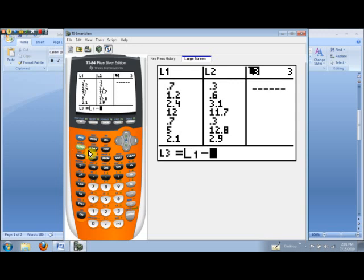And then notice when we do that, we get the differences of the ordered pairs. In other words, 0.7 minus 0.3 is 0.4, 1.2 minus 0.6 is 0.6, and so on. Notice some of the differences are negative,